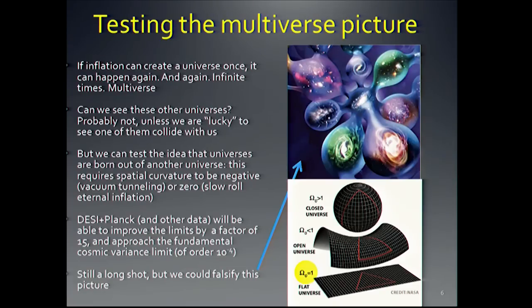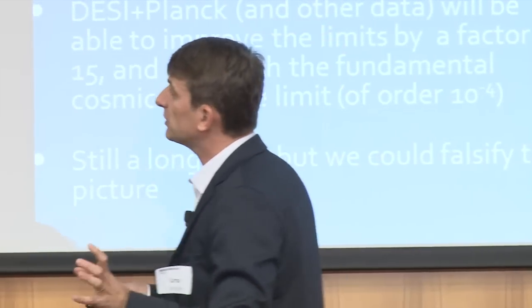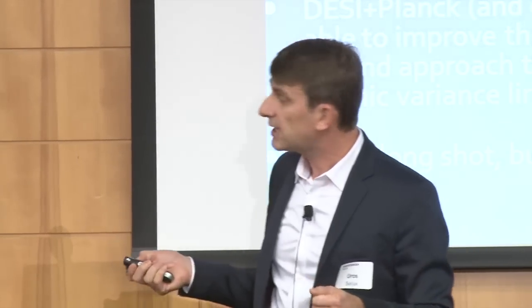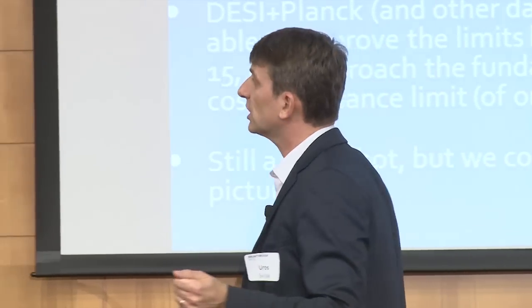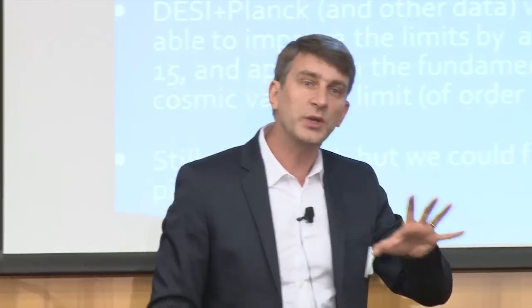How do we measure and distinguish positive curvature from zero or negative? The basic idea is to look at the sum of angles in a triangle: more than 180° means a closed universe, exactly 180° is flat, and less is open. Right now we can do this at about the 1% level. In the next five years, using DESI, Planck, and other data, we should improve this by a factor of 10 to 15, approaching a level of a few times 10⁻⁴ — not far from the fundamental limit of roughly 10⁻⁴. So in the next several years we should get closer and closer to this fundamental limit, and maybe there's a surprise there.